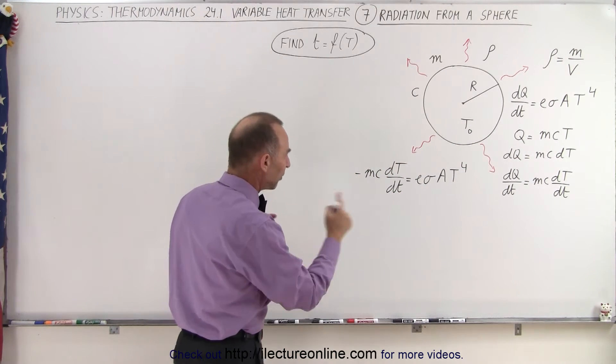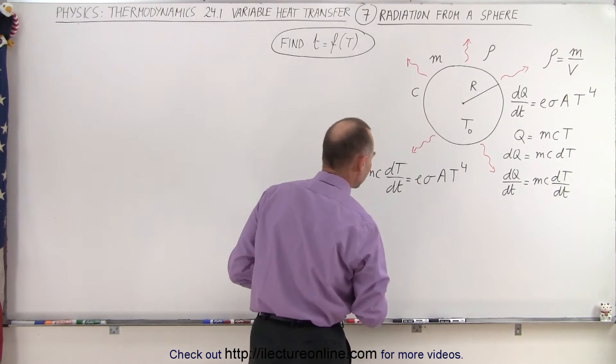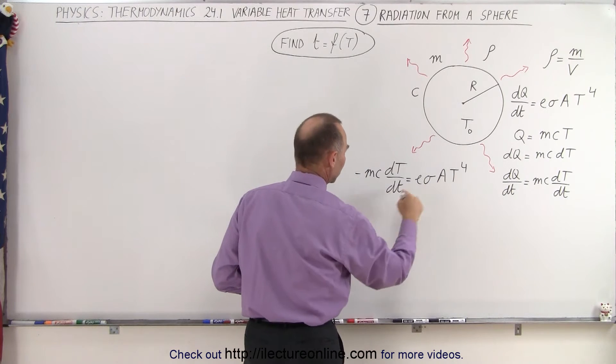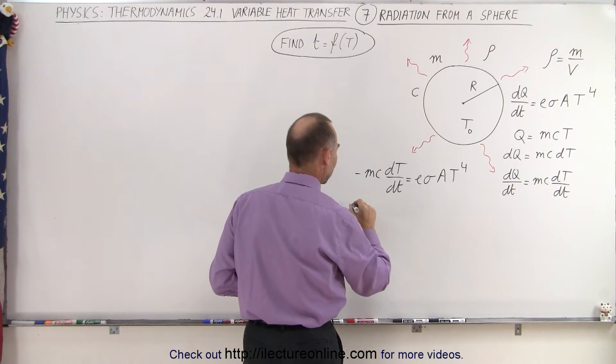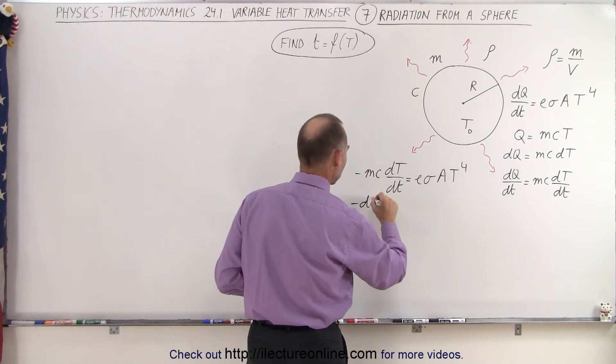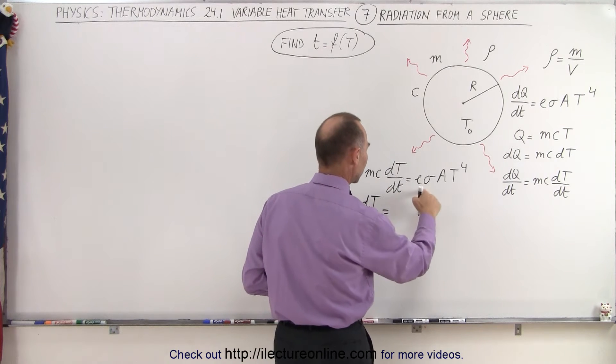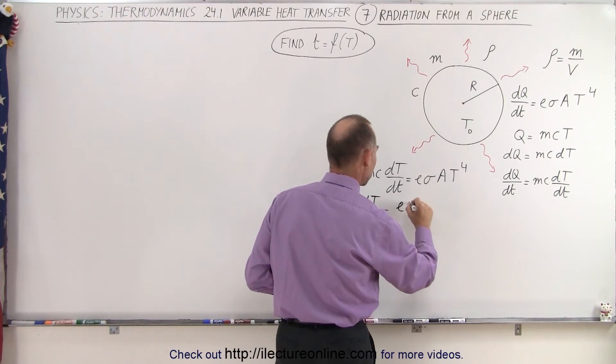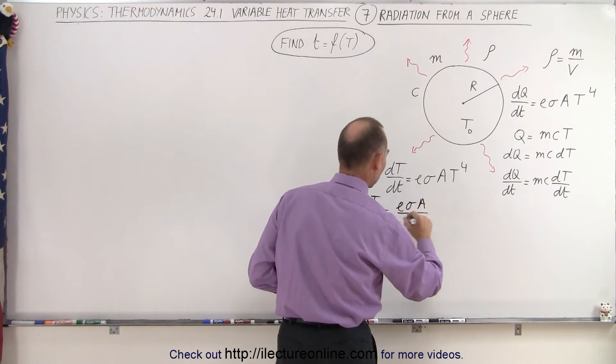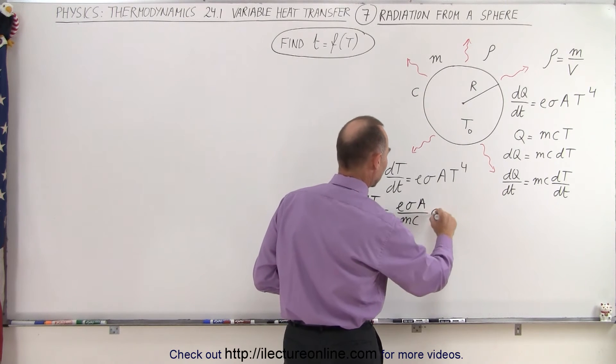So what we need to do now is separate the variables, the T and the t for the temperature and the t for the time. So we'll put the dt over here. We'll put this underneath here so we can write that minus dT over T to the fourth is equal to, bringing this across, we get E sigma A over MC and then times dt.